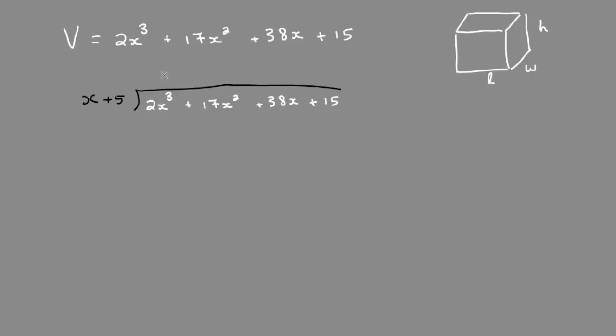So quickly factoring, what times x is 2x cubed? 2x squared. Multiply that by x plus 5 plus 10x squared. Now we subtract.